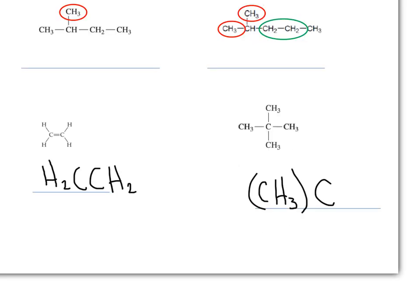Let's condense some more. The first one that we're going to do is the simplest. We see here that this central carbon is attached to four methyl groups. Because it has four methyl groups, we can group them all together and put four methyl groups attached to that central carbon.